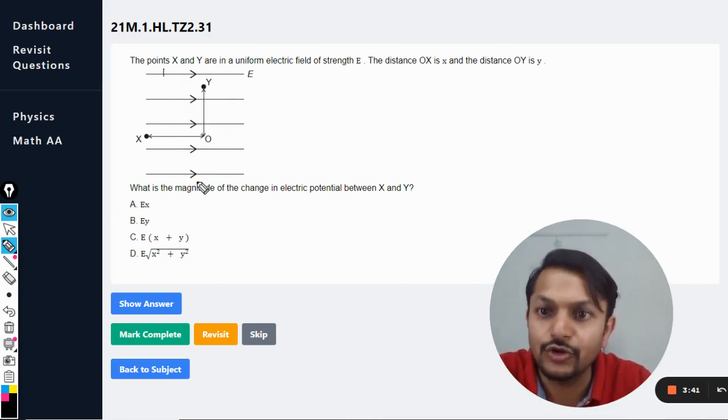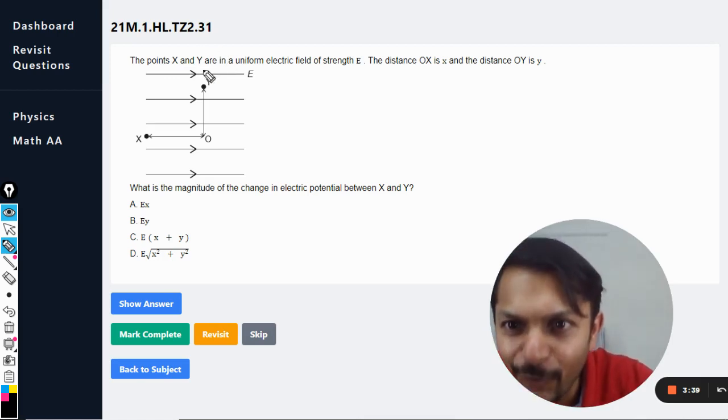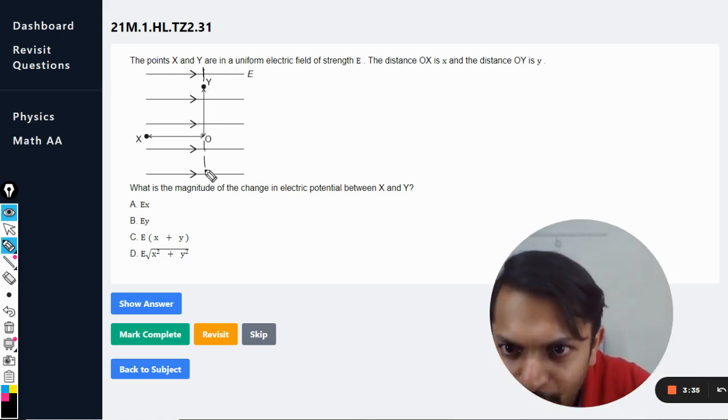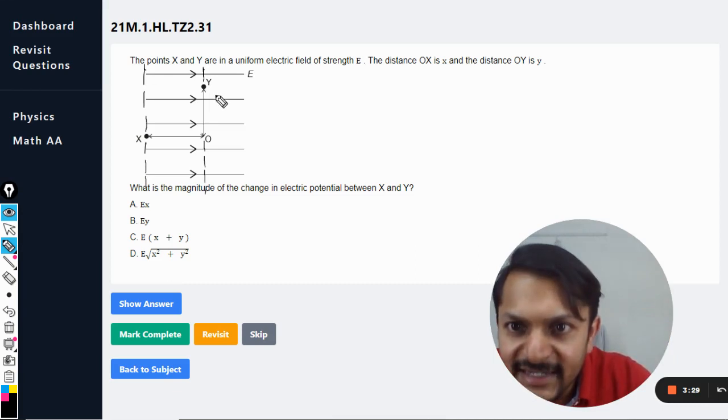Okay, I'm not able to draw them properly but anyways what I want to say is that these lines like from Y to zero, Y to O and this point which is like X.